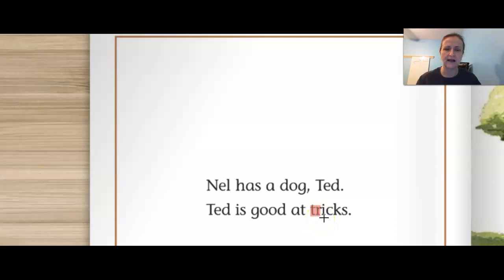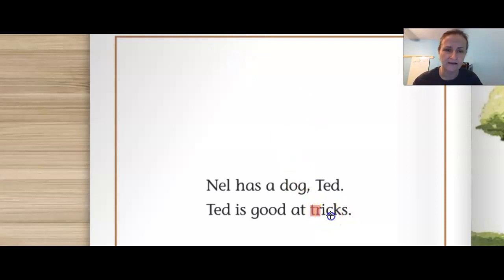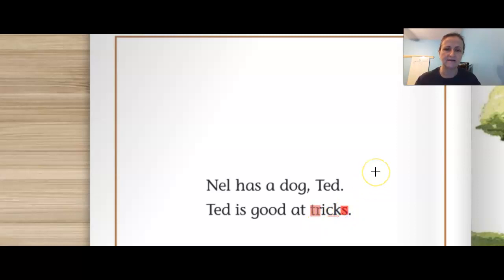T-R, short I. I see a digraph right there — C-K. So we have T-R, I, CK. And here's a suffix at the end — we learned the suffix S. That one makes it plural. Tricks.